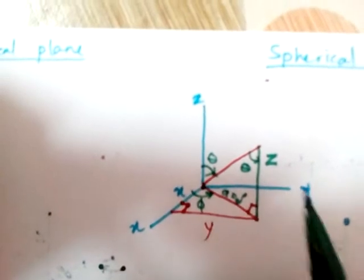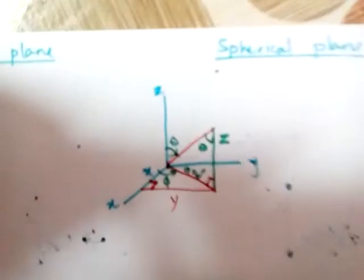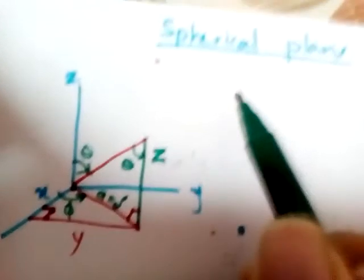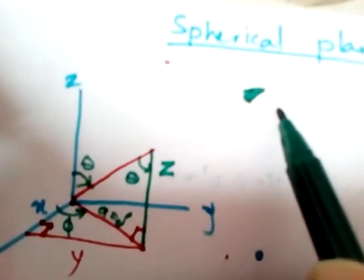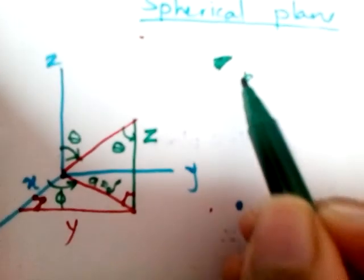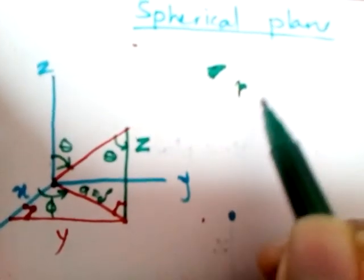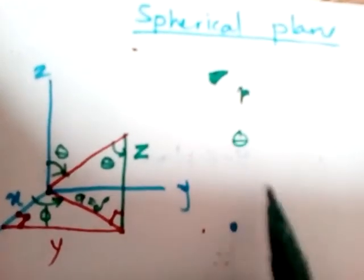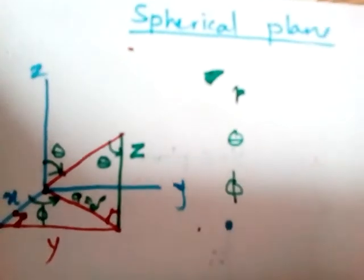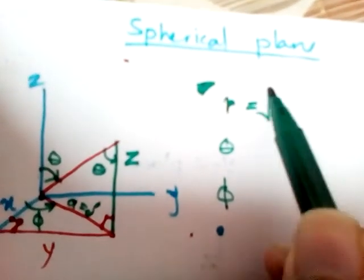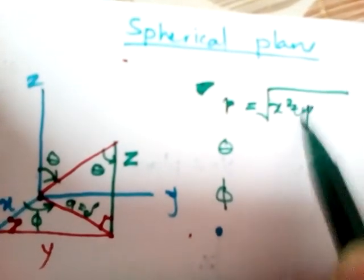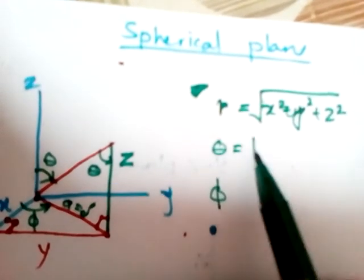Okay, now let's just list all the formulas down there for spherical plane. For spherical plane we have, sorry we don't have c, we have r. That looks like p, yeah we have r, and then we have theta, and then we have phi. Yes, so r is going to be under root x squared plus y squared plus z squared, and theta is tan inverse...